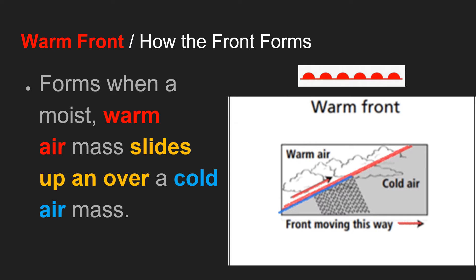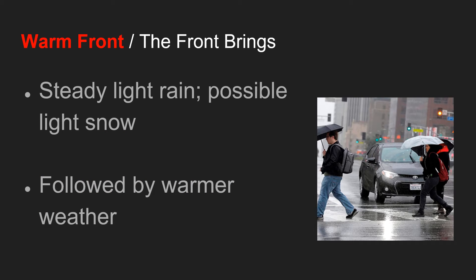Our next front is the warm front. As it indicates, the warm air is what's going to be in charge this time. The warm air slides up over the cold air. The warm air mass is moving — in this case, from west to east — and as it comes across the cold air mass, it just takes over and slides on top of it. We indicate a warm front by a long line with what I call little half suns. Warm fronts usually bring some steady light rain, possible light snow, and it's followed up by some warmer weather.